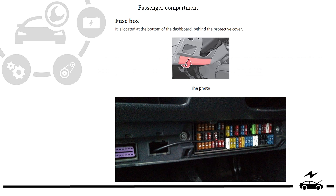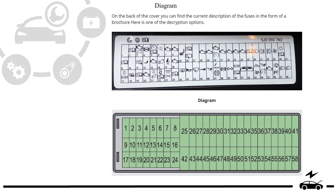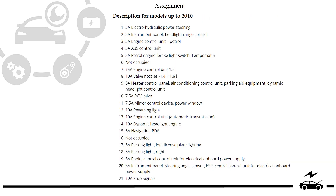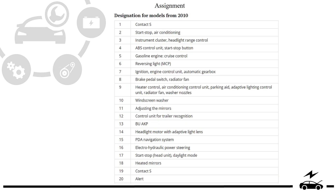Passenger compartment fuse box: location, photo, diagram. Type 1 assignment. Type 2 assignment.